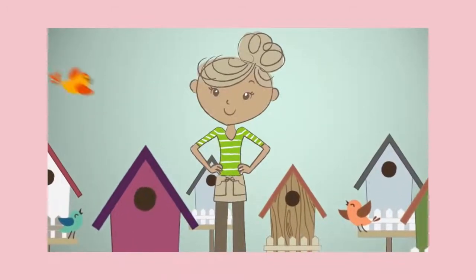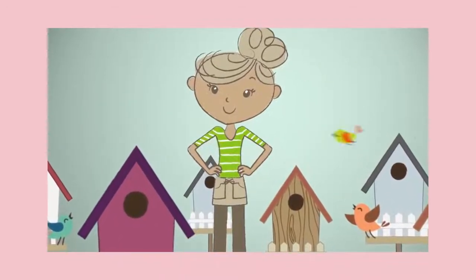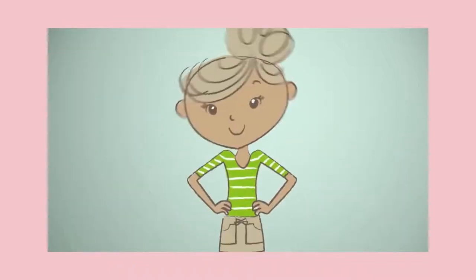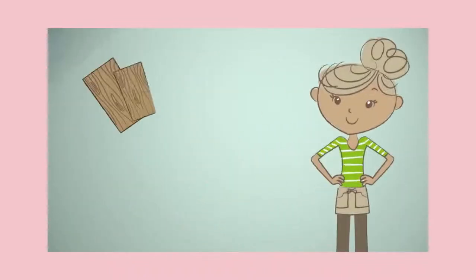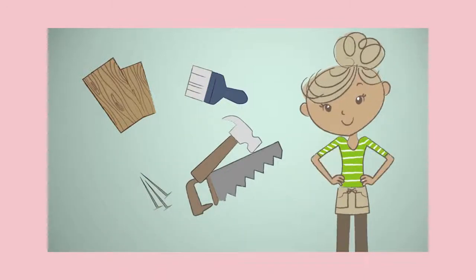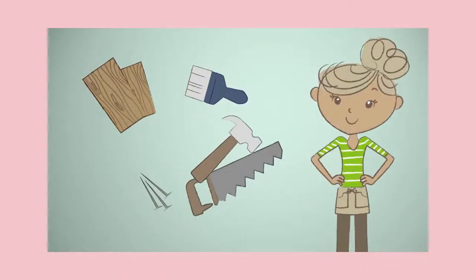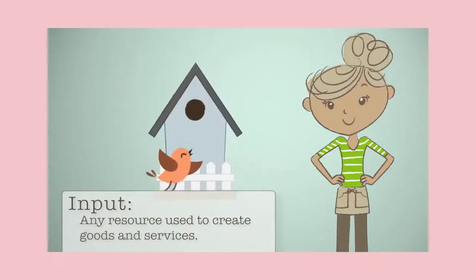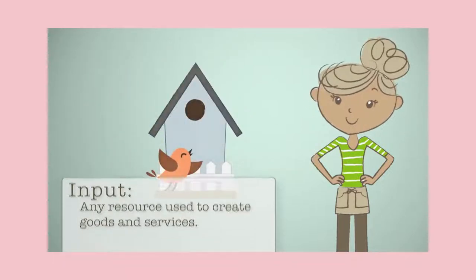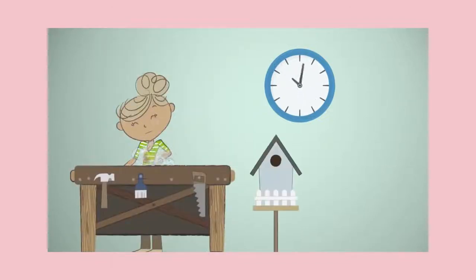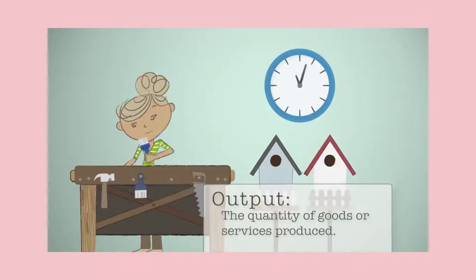Meet Beth — she owns her own business making and selling birdhouses. To make a birdhouse, Beth needs wood, paint, nails, tools, and her own labor. These are her inputs. An input is any resource used to create goods and services. It takes Beth one hour to make each birdhouse. The completed birdhouses are her output — output is the quantity of goods or services produced.